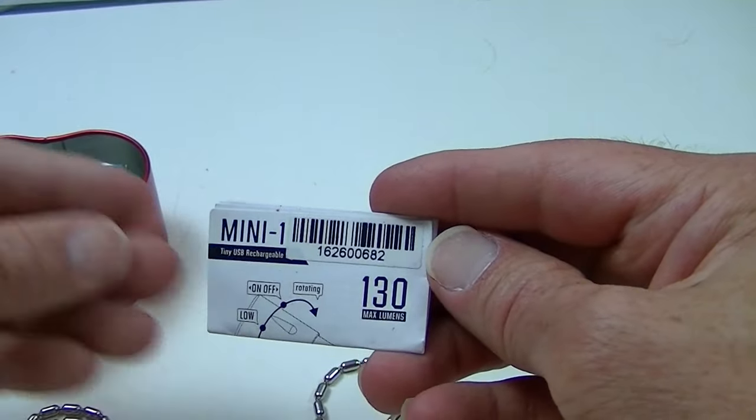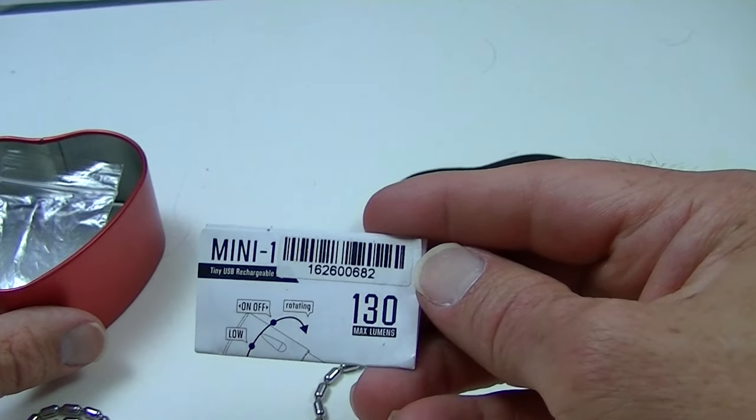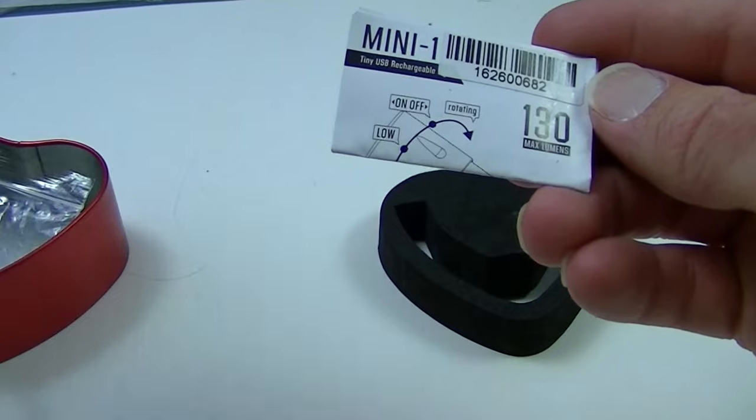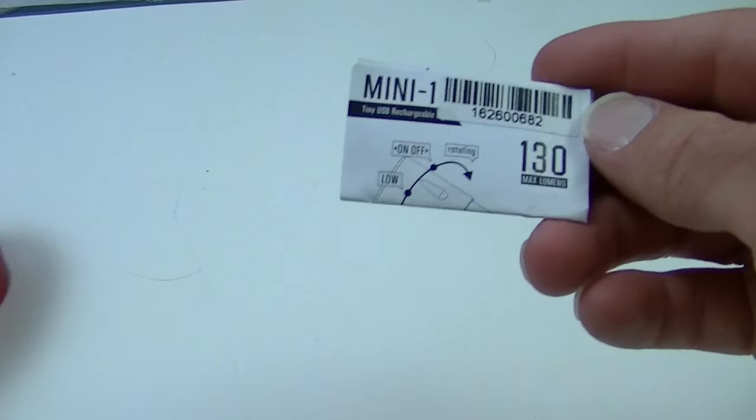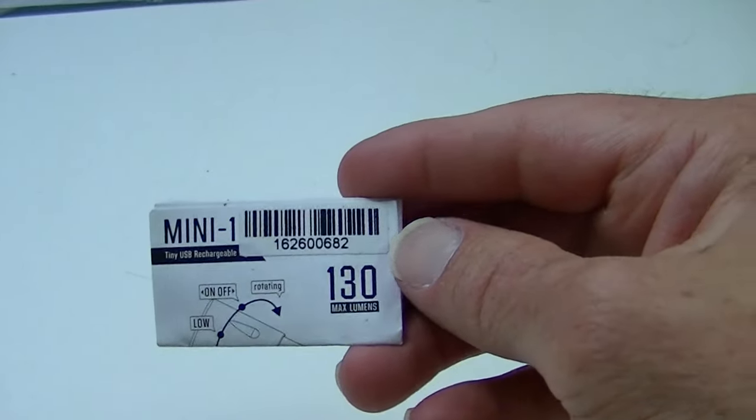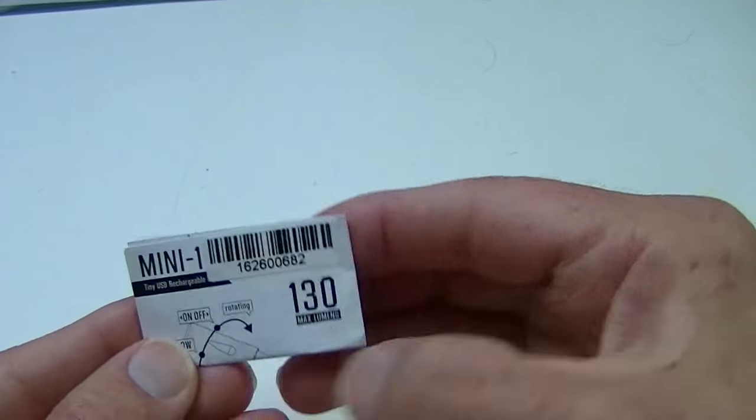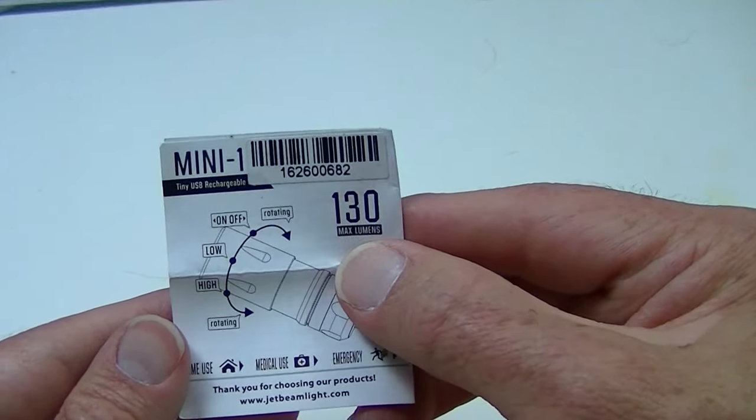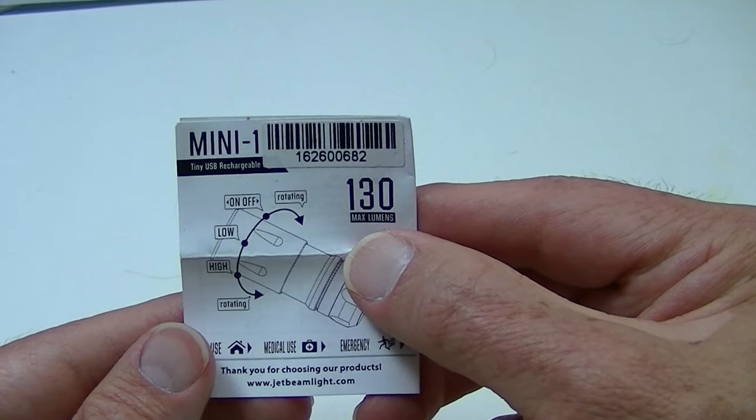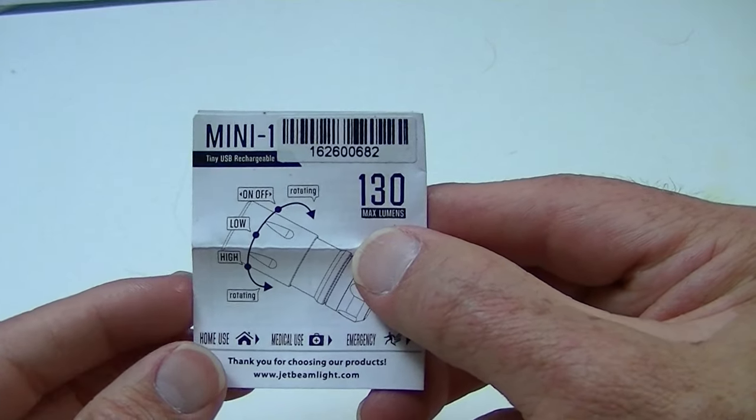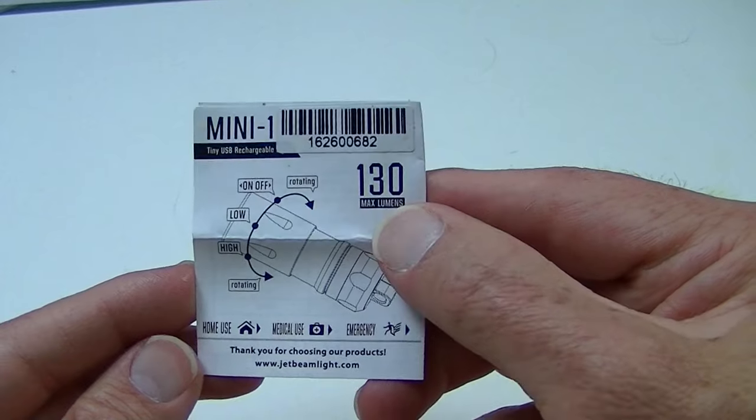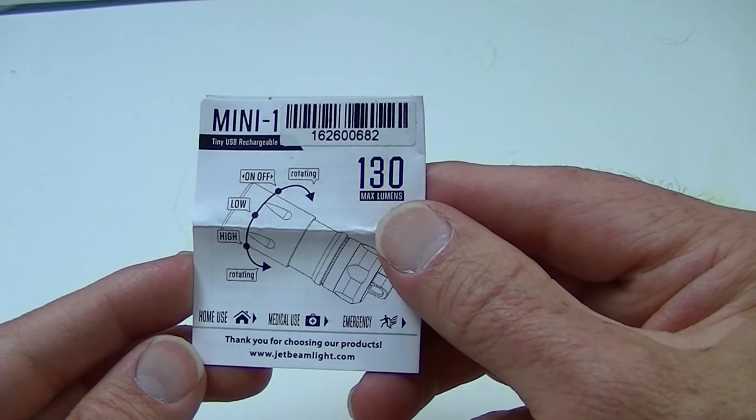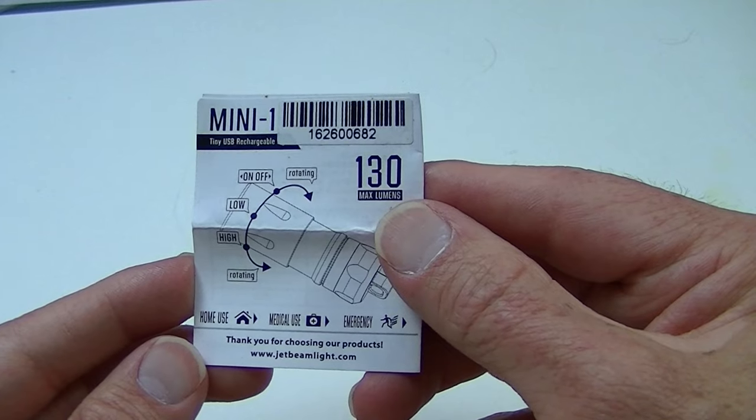130 lumens is the maximum output for the mini, and it has two modes: a low and a high. That's pretty much all you need with a flashlight of this size. As you can see, rotate the ring: on, off, low, and high. It also is completely rechargeable.